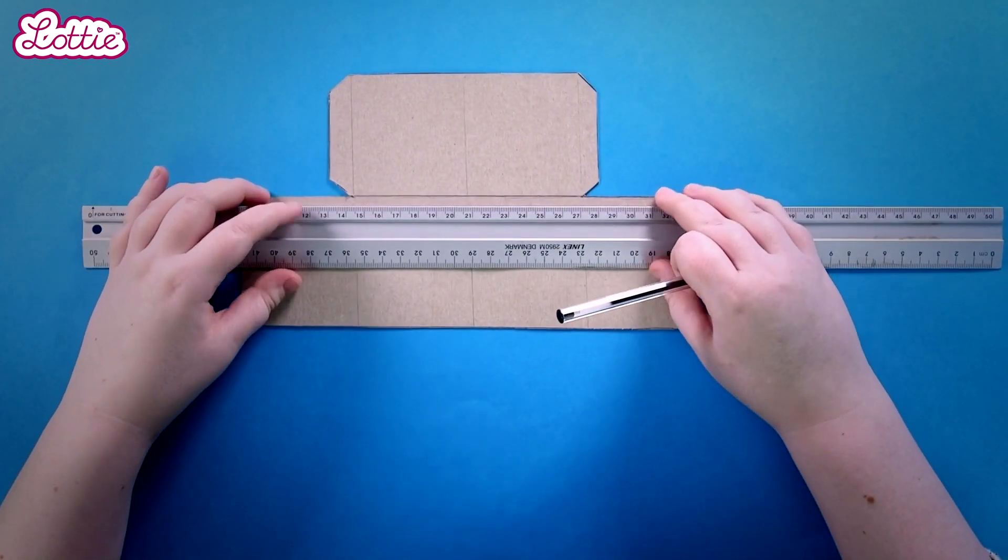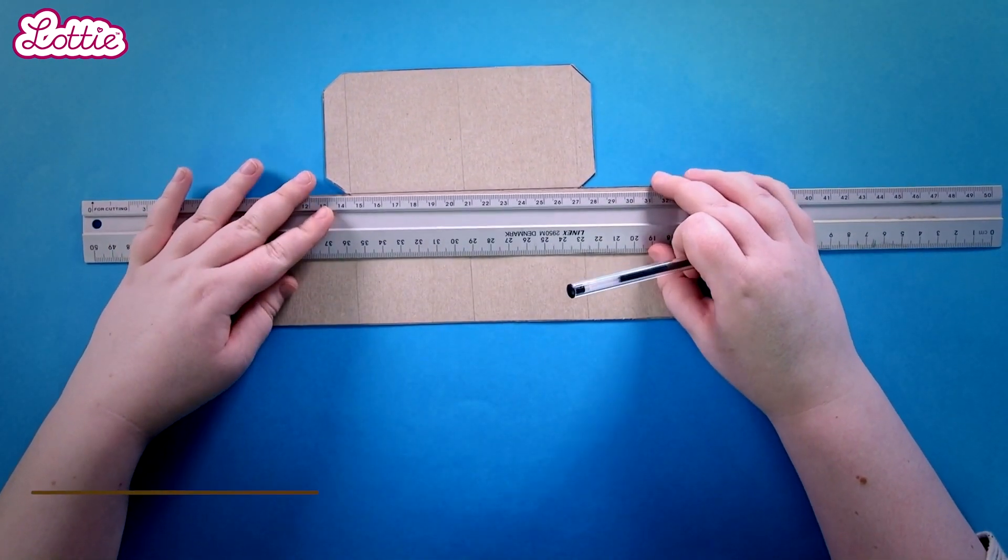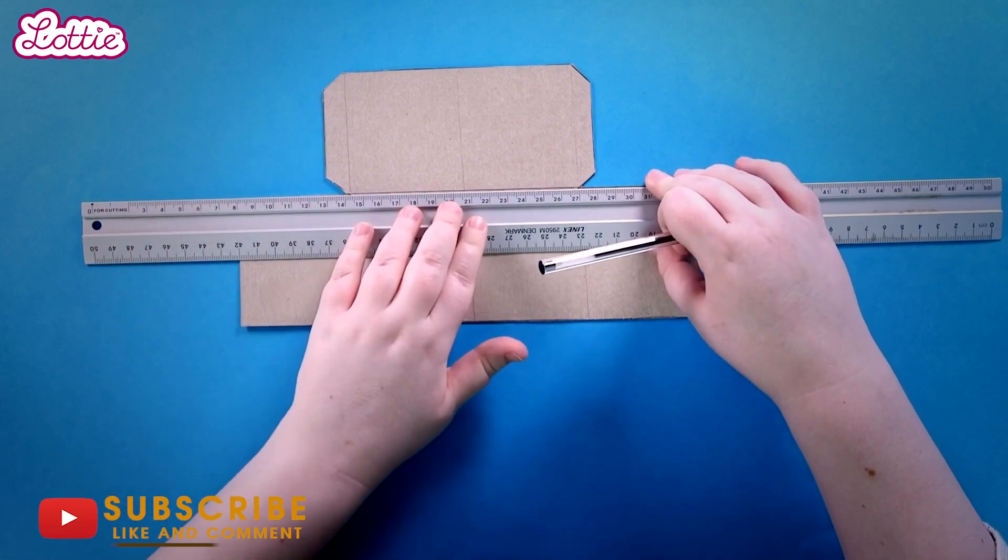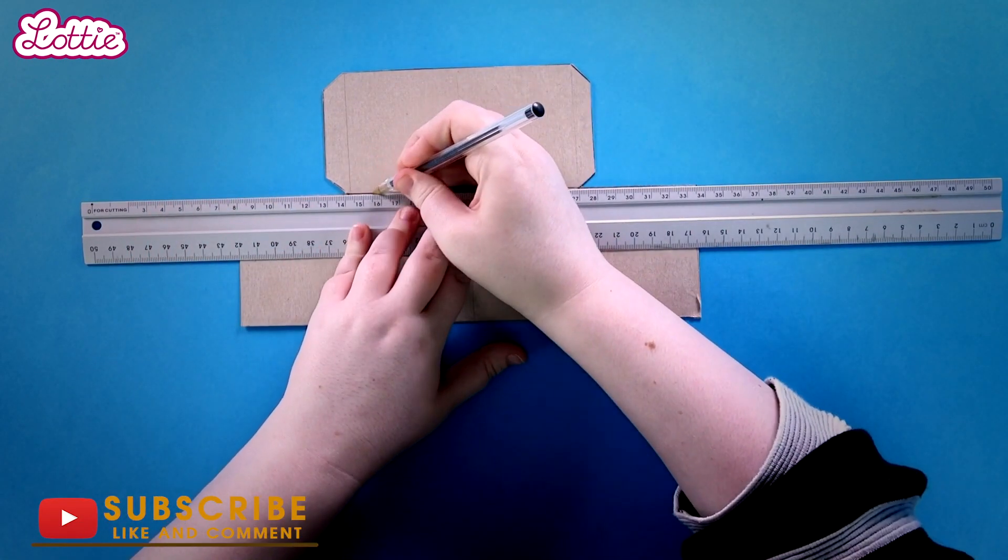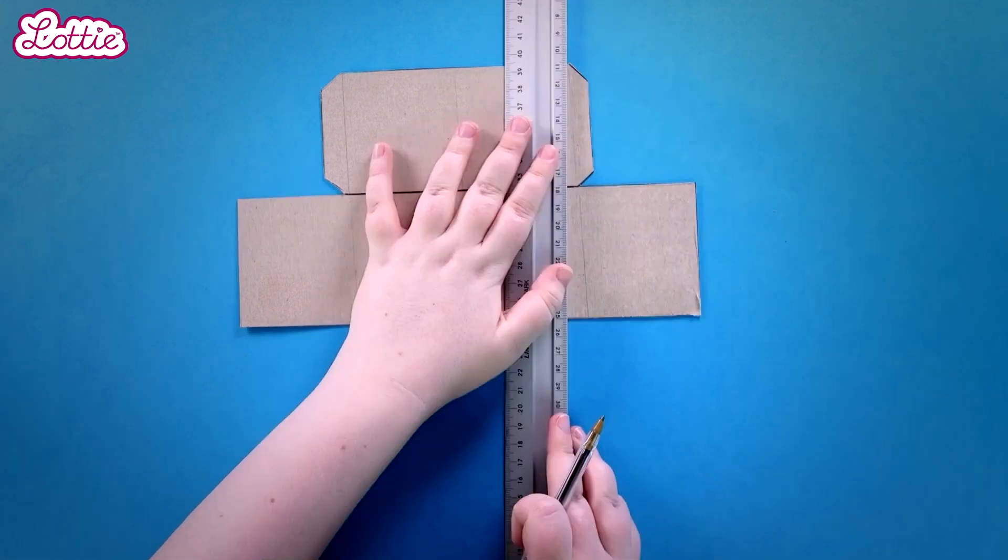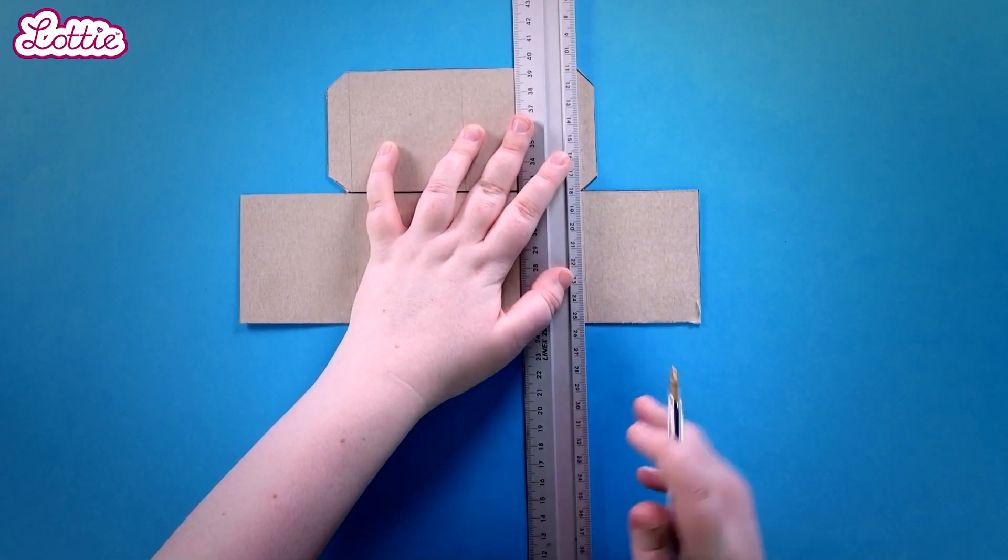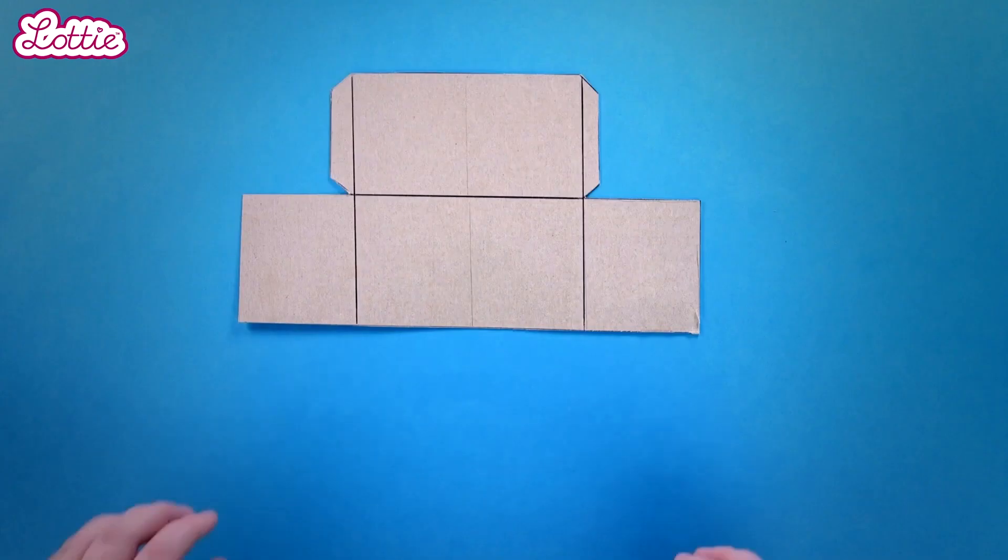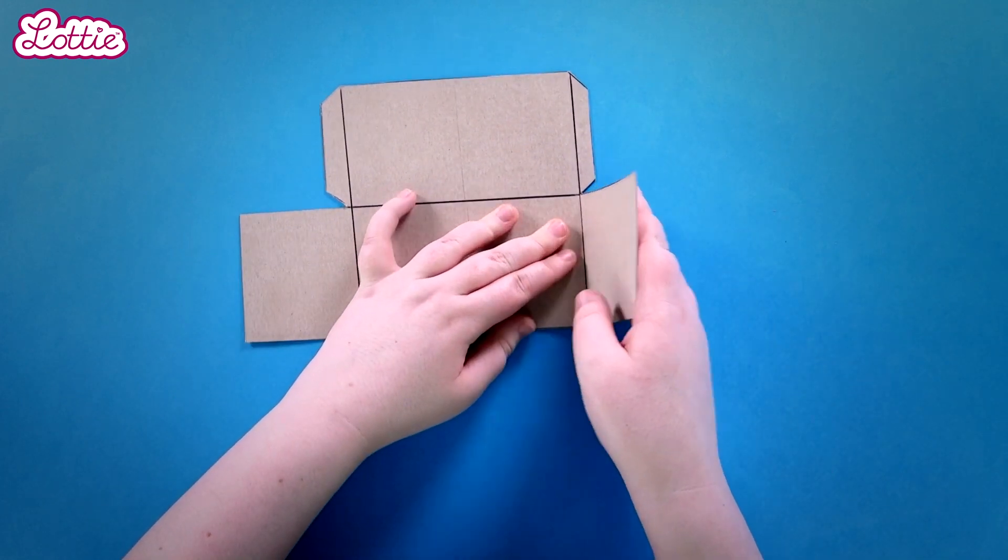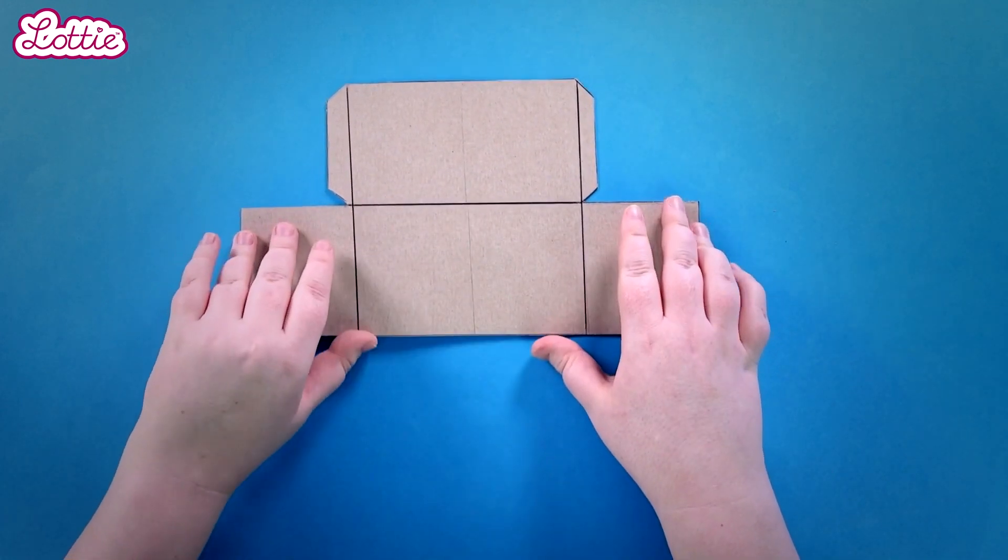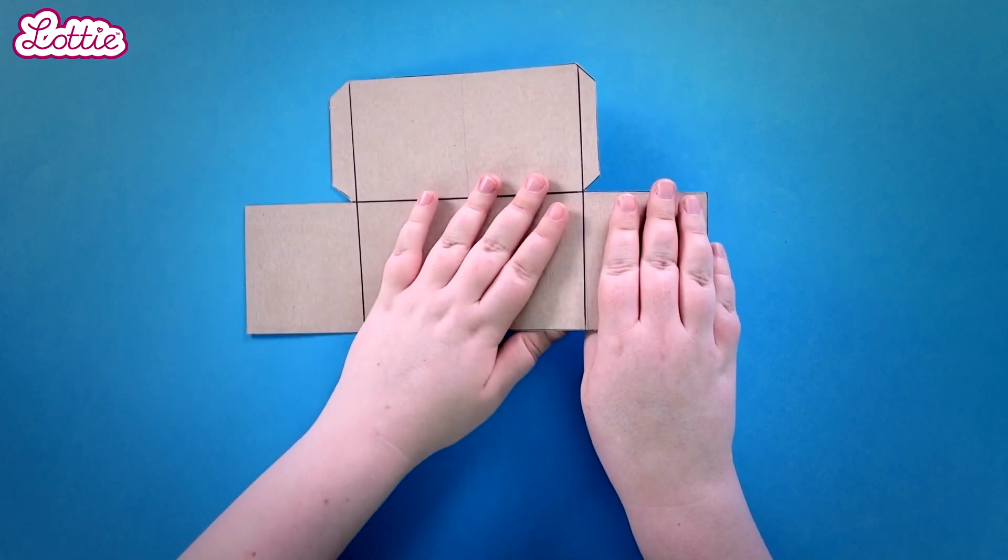When you've cut it out and have a shape like this, grab your ruler again. Lean heavily on your pen for these lines. You have to draw three lines like this. These are fold lines. Now it's much easier to fold the cardboard, see?